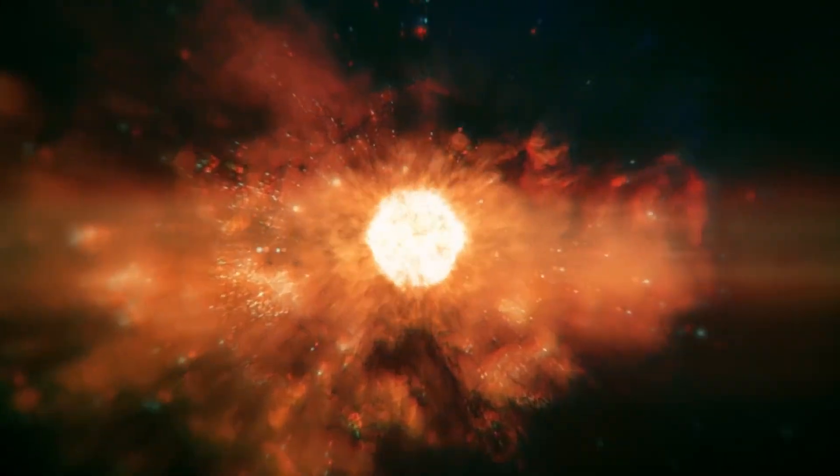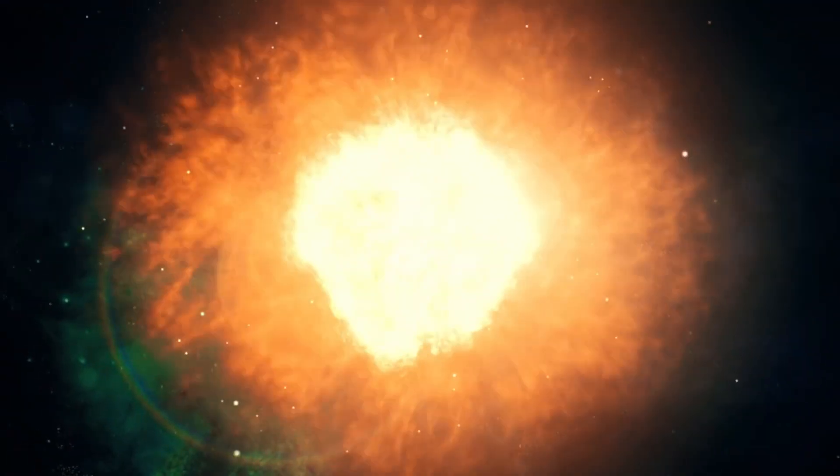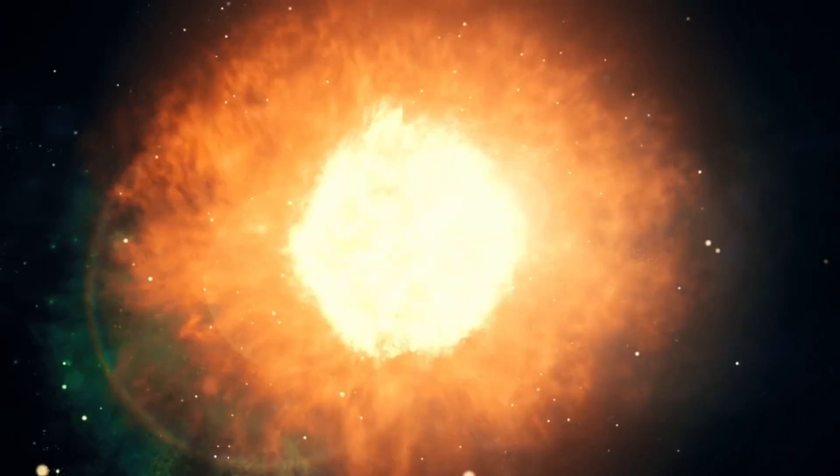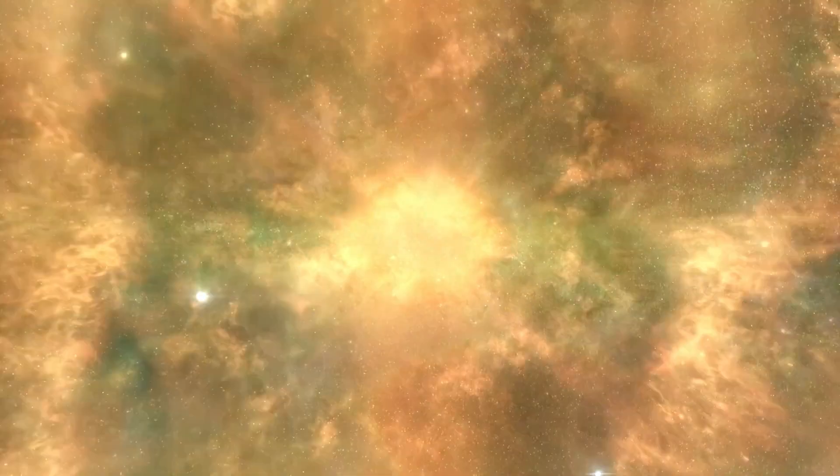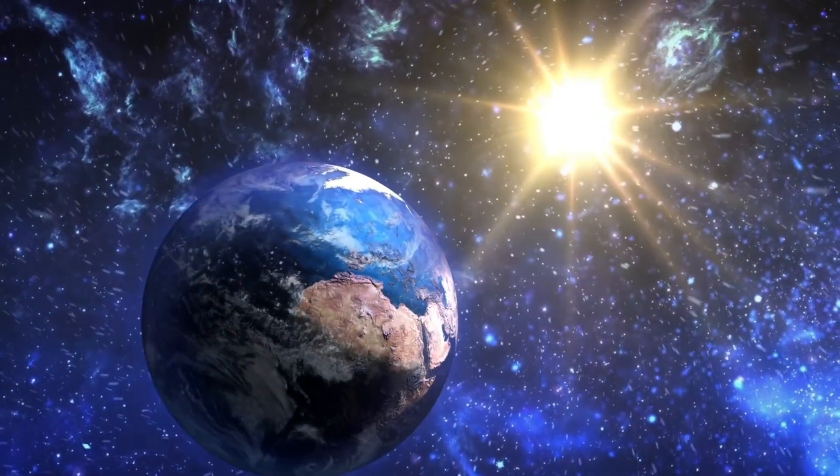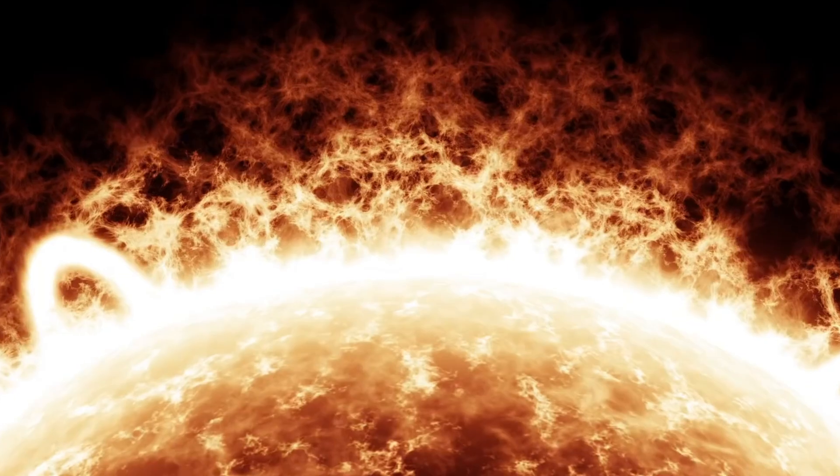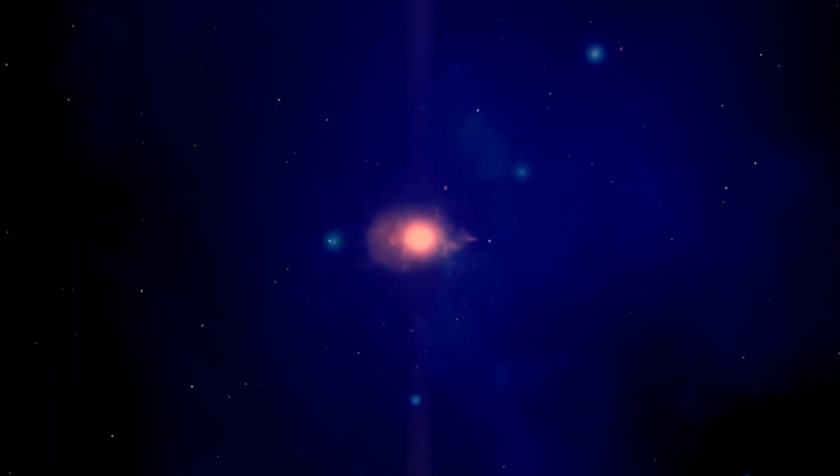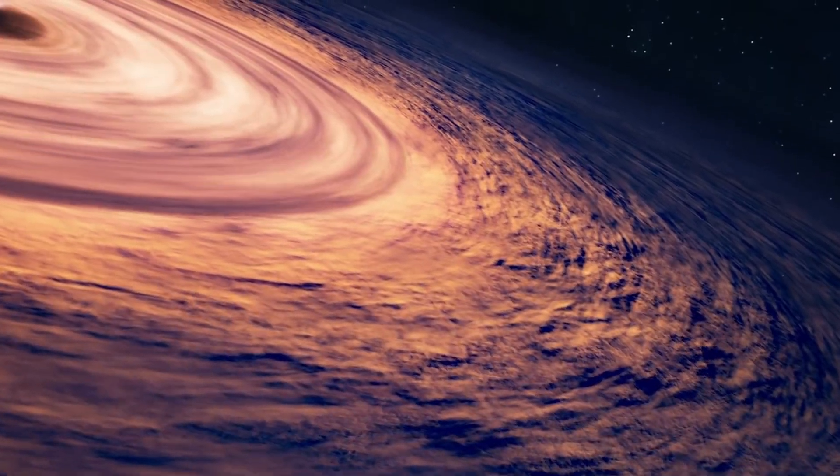Betelgeuse is like a cosmic superstar with two mesmerizing acts of twinkling. In its first act, which lasts for a remarkable 400 days, the star dazzles us with intricate pulsations caused by some truly fancy cosmic choreography. It's a rhythmic spectacle that has fascinated astronomers for centuries. Now, here's where the cosmic intrigue deepens. Betelgeuse's second act is a more enigmatic and prolonged show spanning around 5.6 years. What causes this extended performance remains a captivating cosmic mystery.